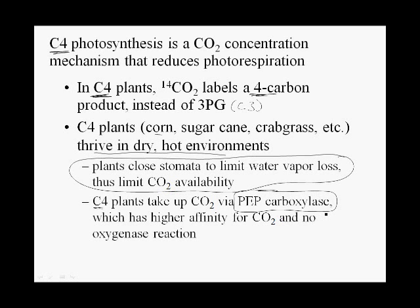PEP carboxylase doesn't have rubisco's problem. It has a very high affinity for carbon dioxide. So even when CO2 levels plummet and get really low inside the leaf, PEP carboxylase can still keep working. Another thing is that PEP carboxylase has no oxygenase activity — it completely ignores oxygen, no matter how high the oxygen levels get.